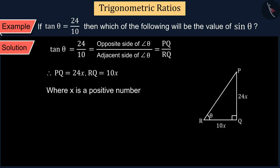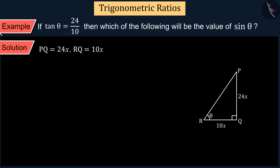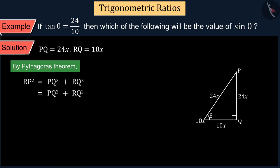To find the value of sin θ we will also need the hypotenuse of the right angle triangle, that is the side RP. We can calculate the value of side RP with the help of Pythagorean theorem.